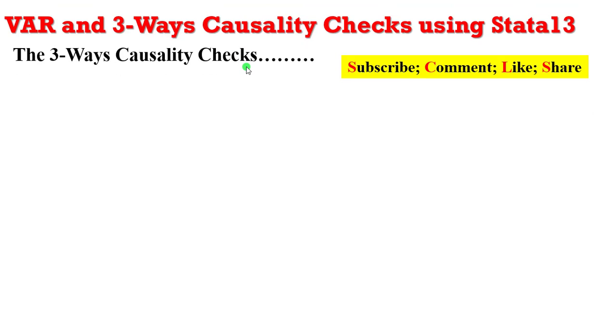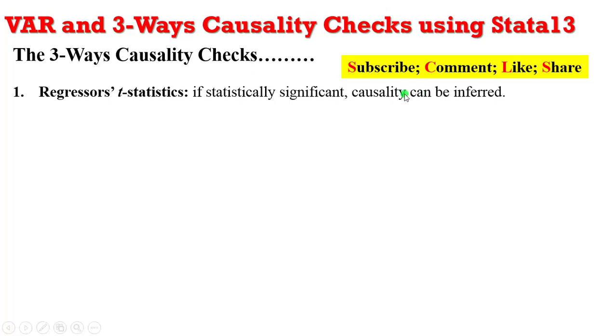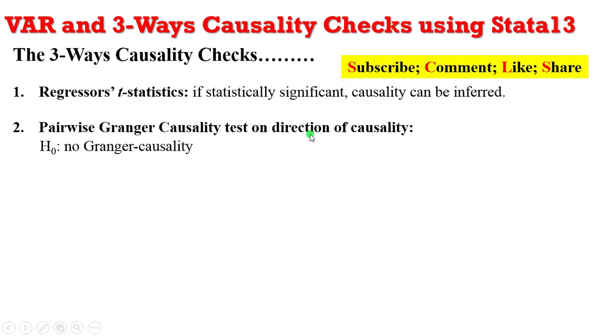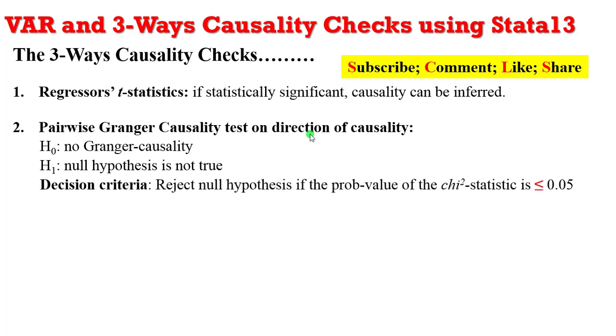So what are the three ways by which we can check for causality in a VAR model using Stata? The first way is using the regressors t statistics. If they are statistically significant, then we can infer causality. So that is one way to check. Another way to check is by using the pairwise Granger causality test, which tells us the direction of causality. The null hypothesis of that test is that there is no Granger causality against the alternative that the null hypothesis is not true. So what would be the decision criteria? The null hypothesis is rejected if the p-value of the chi-square statistic is lower or equal to 0.05. So that is the pairwise Granger causality.